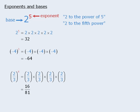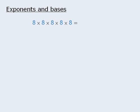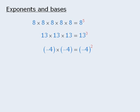Now we can take products and rewrite them using exponential notation. For example, this product of 5 eighths can be rewritten as 8 to the power of 5. Similarly, 13 times 13 times 13 times 13 can be rewritten as 13 to the power of 3. Negative 4 times negative 4 can be rewritten as negative 4 to the power of 2.